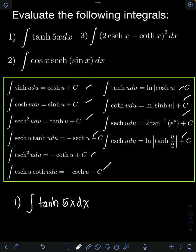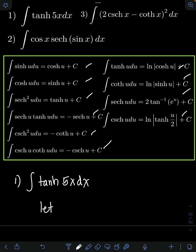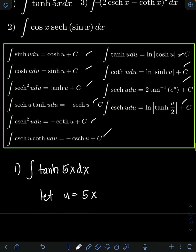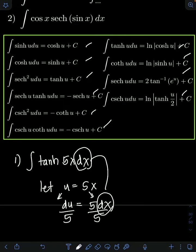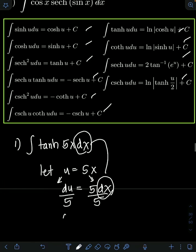Going back to the problem, let's use substitution first. Let u equal 5x. Getting the derivative of both sides: du equals the derivative of 5x, which is 5 dx. We have created the dx term in the original integral, but we have an extra coefficient of 5 which we don't need, so we divide both sides by 5, giving us du/5 equals dx.